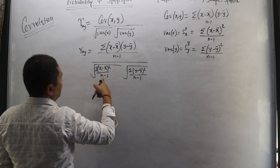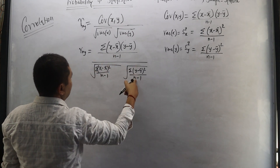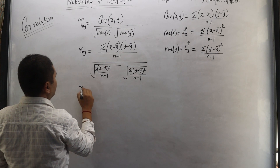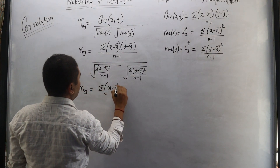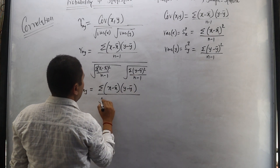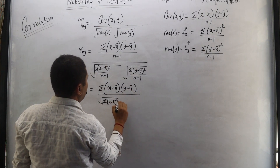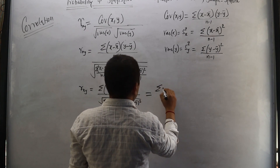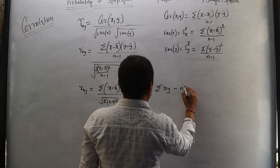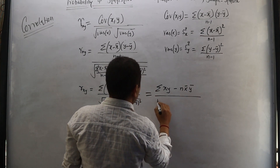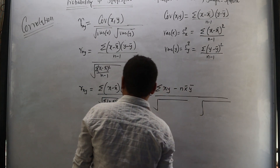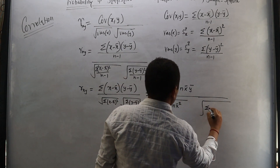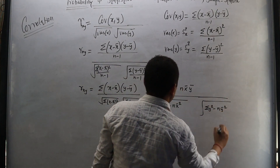If we operate this, the (n − 1) terms under the square roots cancel with the (n − 1) in the numerator. So correlation can be simplified to: summation of (x − x̄)(y − ȳ) divided by the square root of summation of (x − x̄)² and the square root of summation of (y − ȳ)². This can be further written as summation of xy − n·x̄·ȳ, divided by the square root of (summation of x² − n·x̄²) times (summation of y² − n·ȳ²).